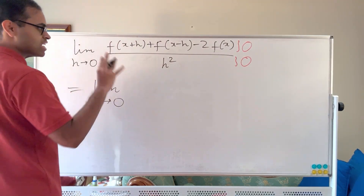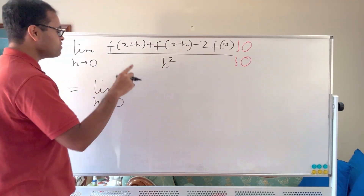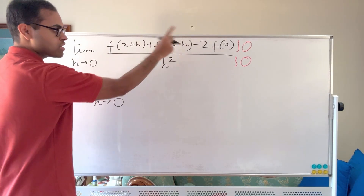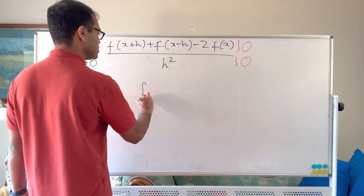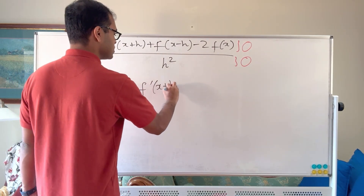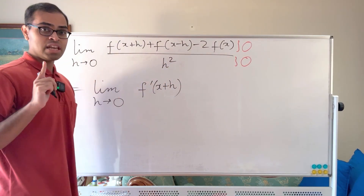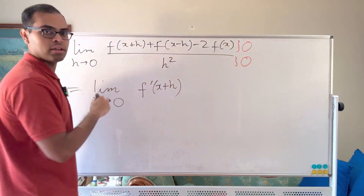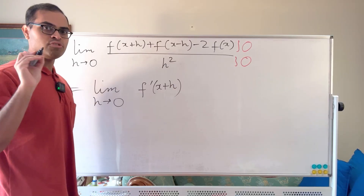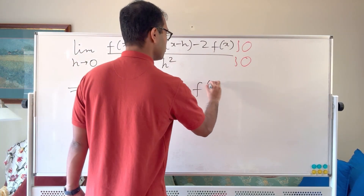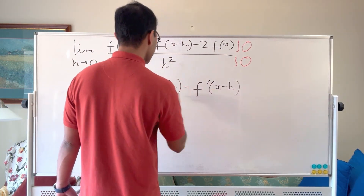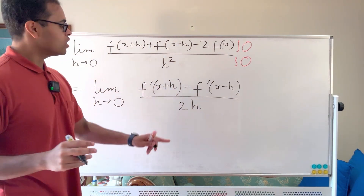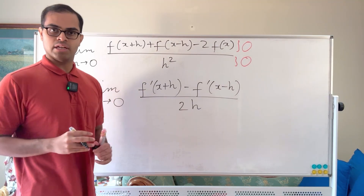We have to differentiate top and bottom with respect to h, because that is the limiting variable — x is a constant here. When you differentiate with respect to h, we get f prime of x plus h, and using the chain rule, the derivative of f of x minus h is f prime of x minus h times negative 1, because the derivative of x minus h with respect to h is negative 1. So we get f prime of x plus h minus f prime of x minus h, divided by 2h. Assuming this limit exists, we can then say these two are equal by L'Hôpital's rule.